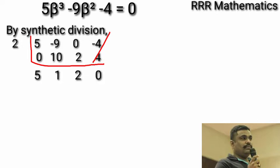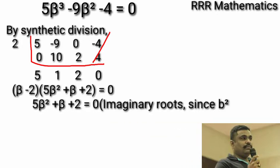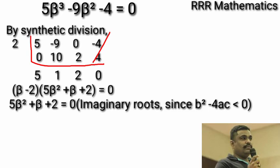Therefore, in this case, beta minus 2 into 5 beta square plus beta plus 2 equal to 0. These are the factors actually. In this case, 5 beta square plus beta plus 2 equal to 0 is a imaginary root since whose discriminant value less than 0. Therefore, beta equal to 2.